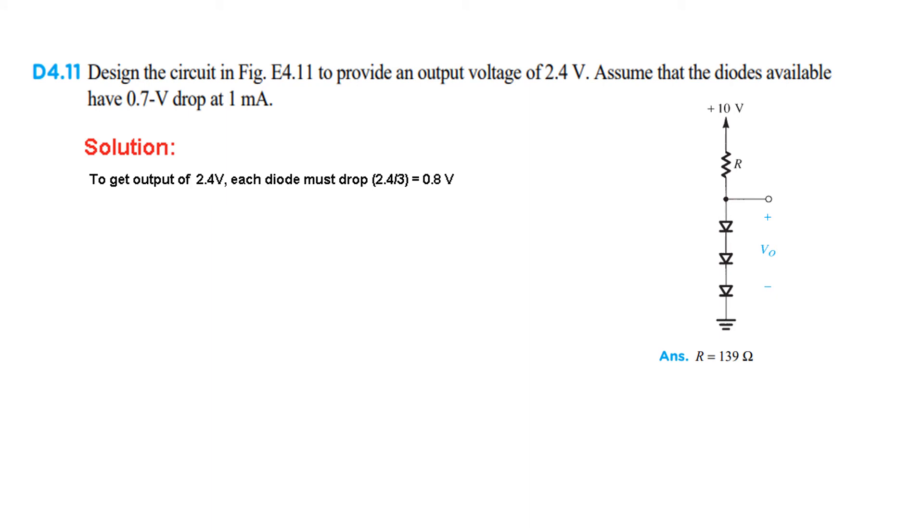Now to get an output of 2.4 volt here, each diode must drop 2.4 divided by 3. That is 0.8 volt.